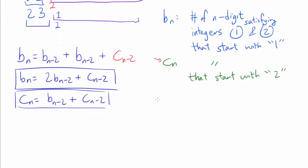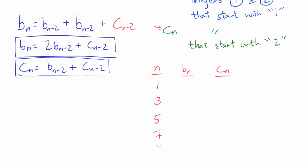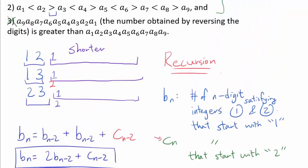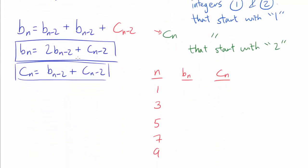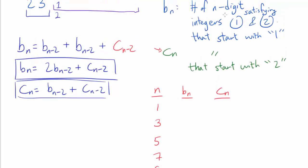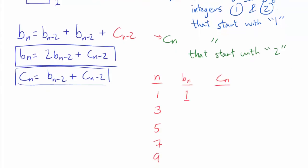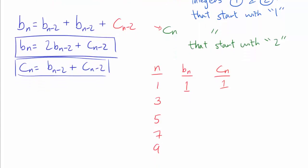Now let's set up the table with columns N, B sub N, and C sub N. We only look at odd values: 1, 3, 5, 7, 9, because our recursion jumps in steps of 2 and we're going up to N equals 9. For N equals 1, B sub 1 equals 1 (only the digit 1) and C sub 1 equals 1 (only the digit 2). We can repeatedly apply the recursive relation to find all the way to B sub 9 and C sub 9.